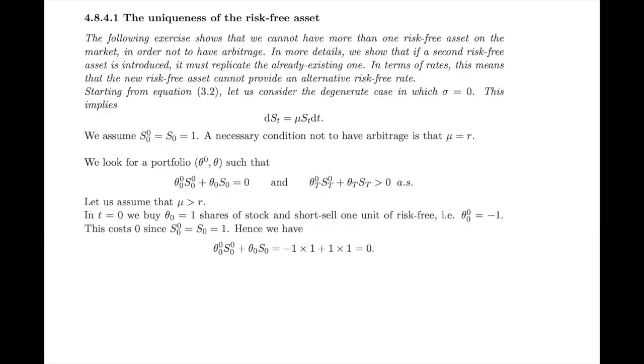Let's show that two different risk-free rates cannot coexist on the market unless we want an arbitrage. In that case, the risk-neutral measure is no longer well-defined. We take as a secondary risk-free asset the standard risky asset S, but assume that sigma equals 0, so the Brownian part disappears. Assume both S and S_0 are normalized to equal 1. We want to show that a necessary condition for no arbitrage is that mu equals R. Both risk-free assets need to give the same rate of return.